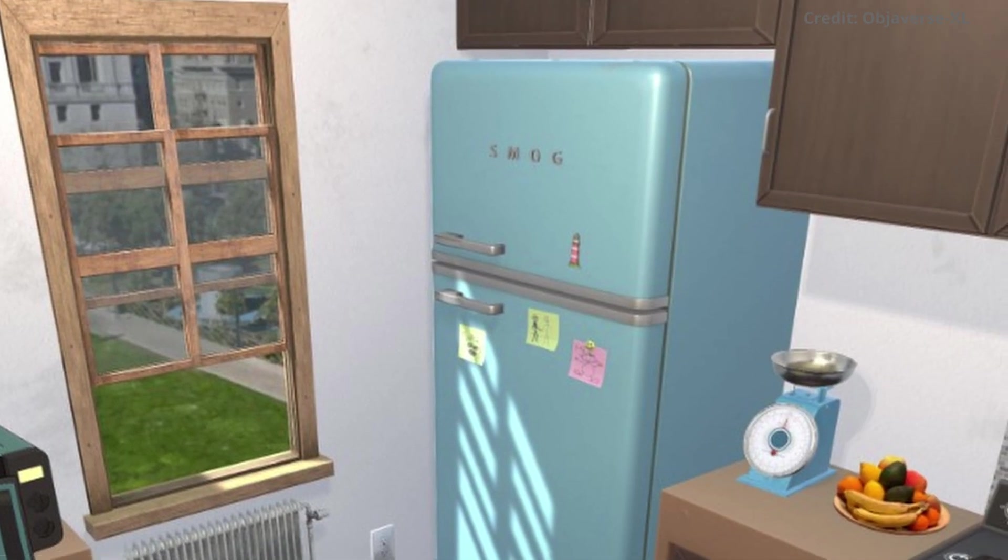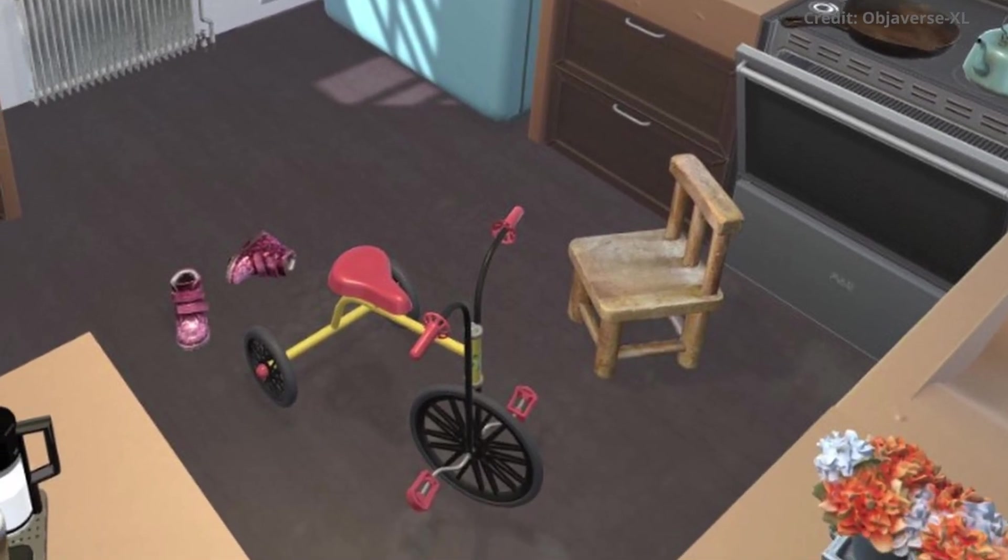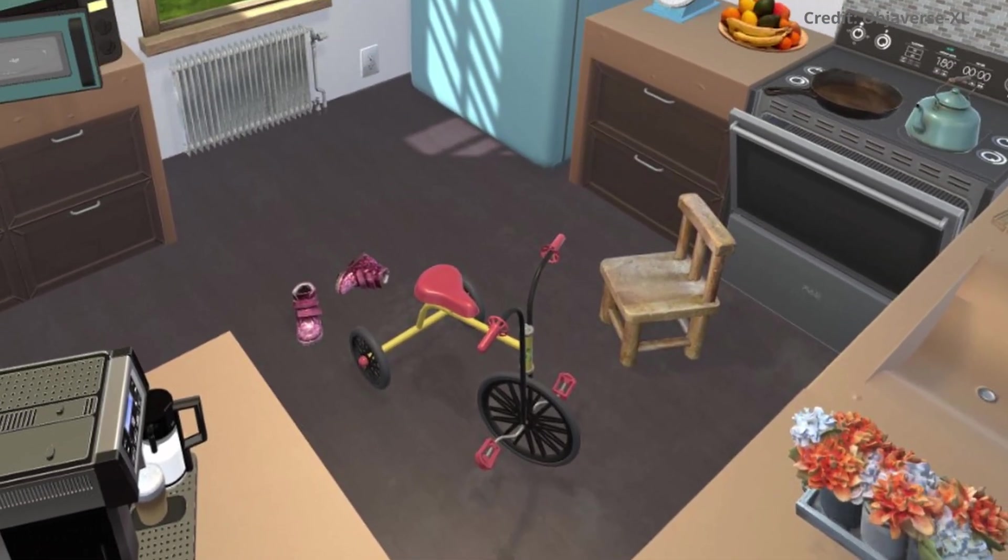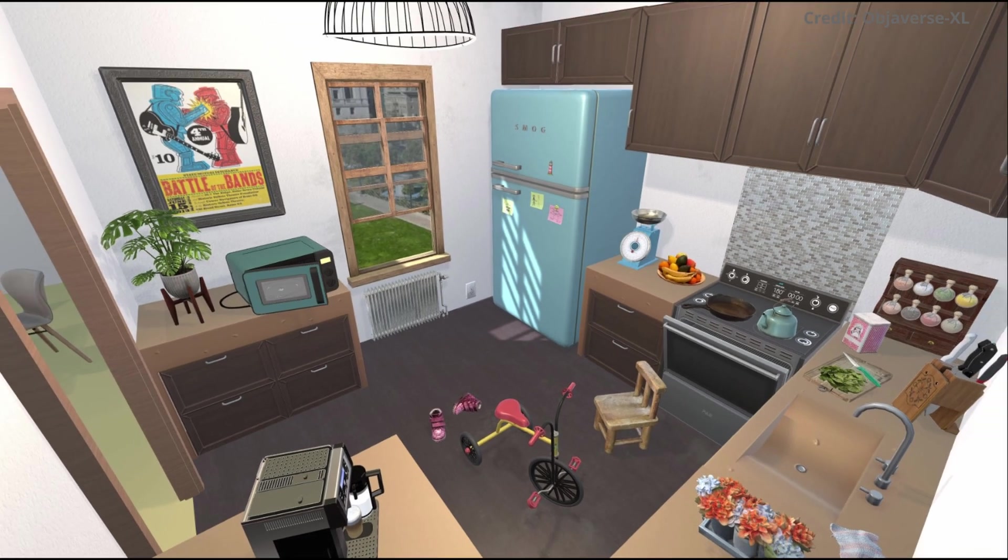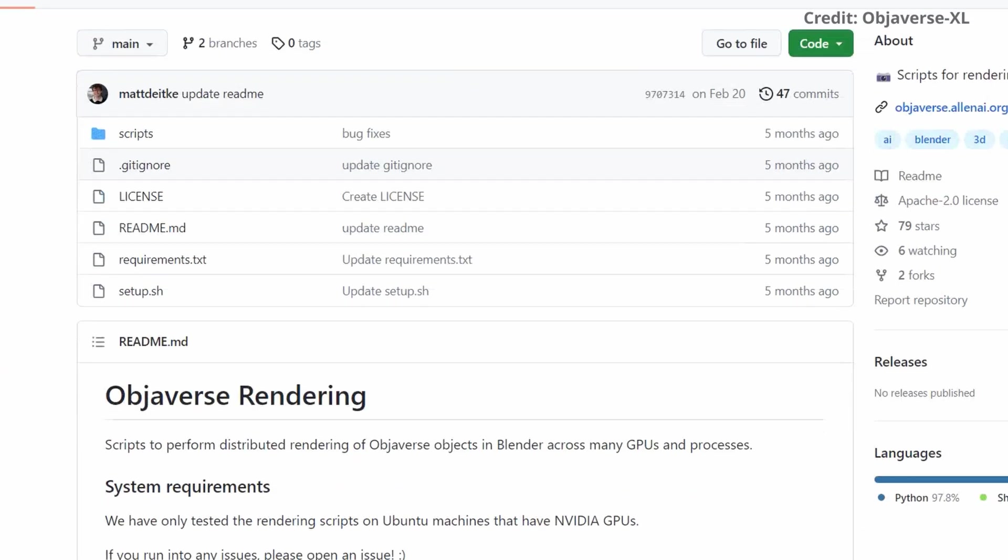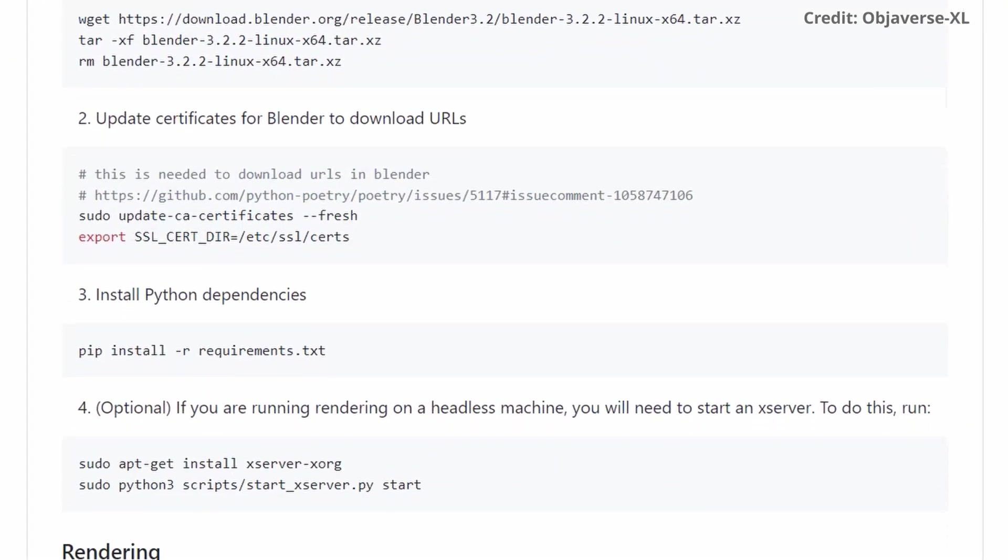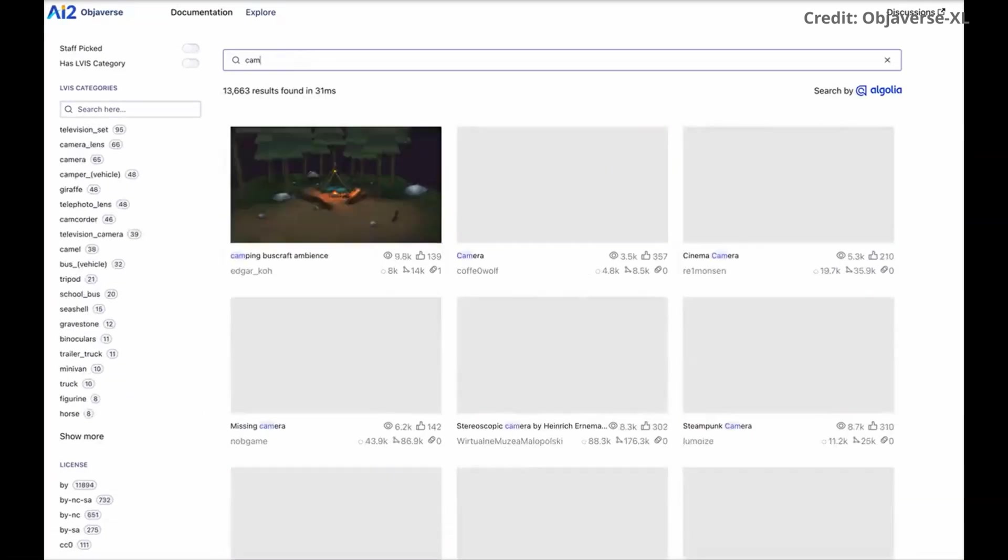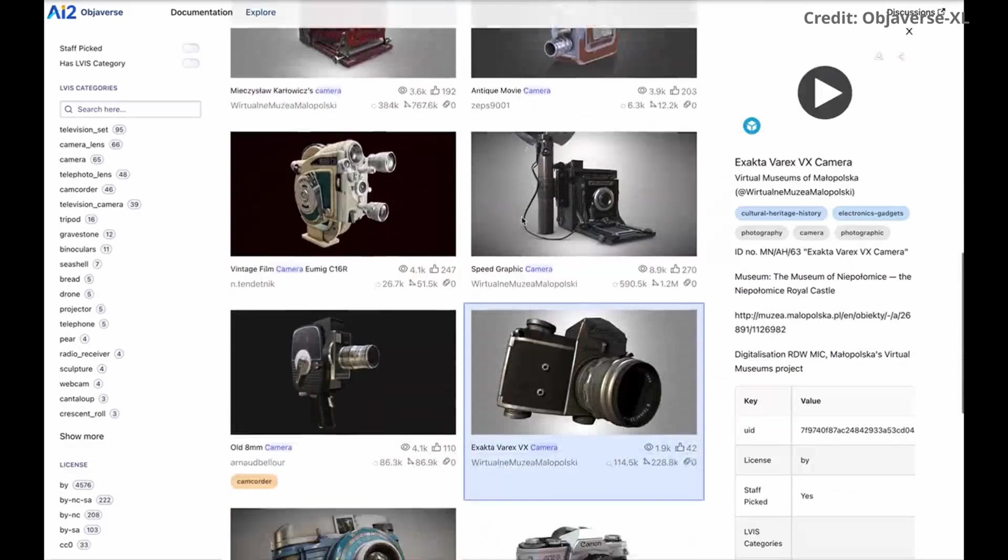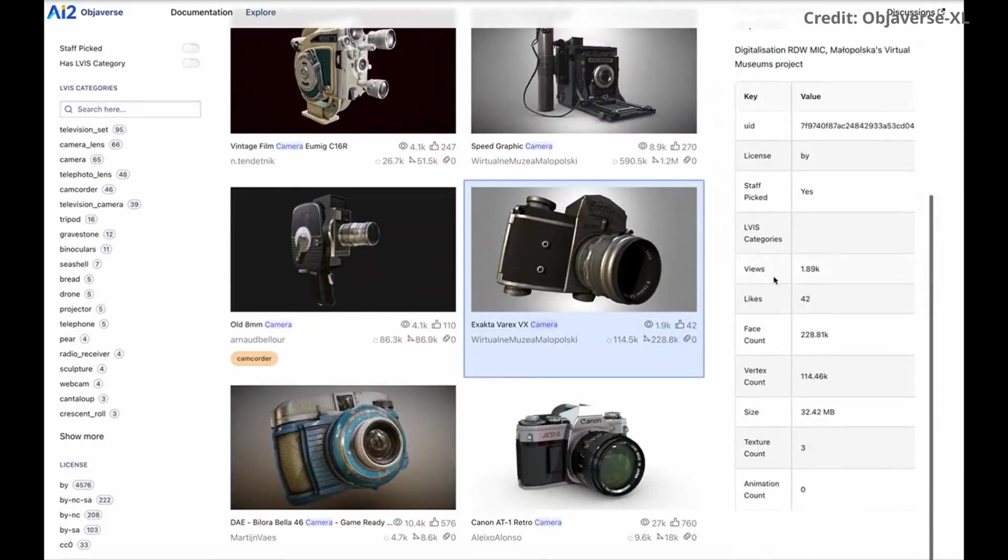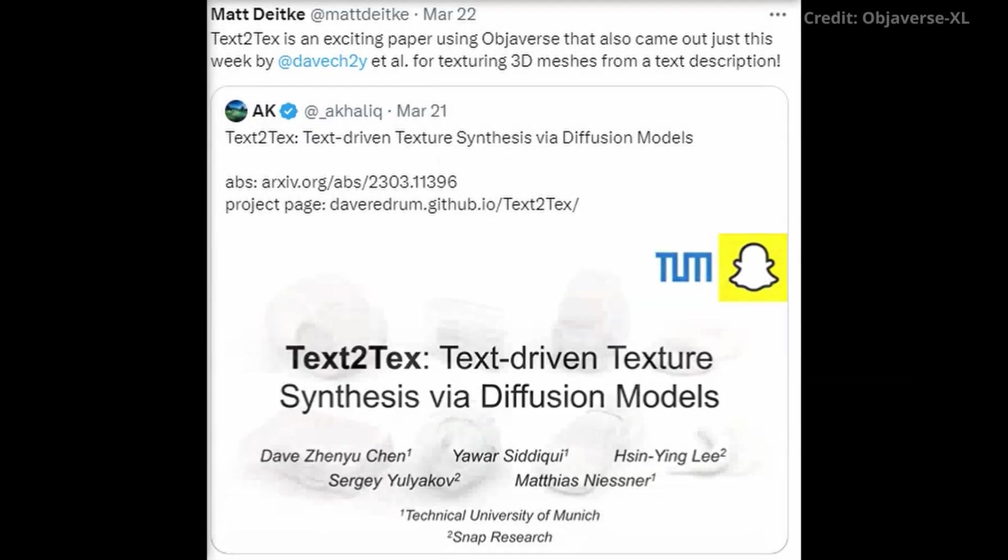Objeverse XL is a collective effort from leading institutions in AI research, including the Allen AI Institute, Columbia University, UWCSE, Stability AI, and Caltech. The introduction of Objeverse XL is set to revolutionize the future of AI. The researchers believe that this massive resource will enable substantial advancements in AI for 3D by significantly enhancing the performance of state-of-the-art models. It opens up new applications in emerging fields such as augmented and virtual reality.